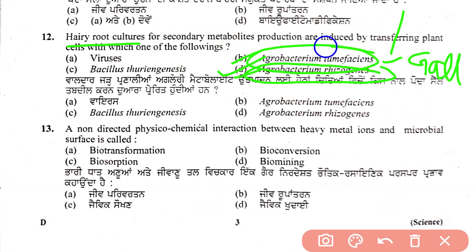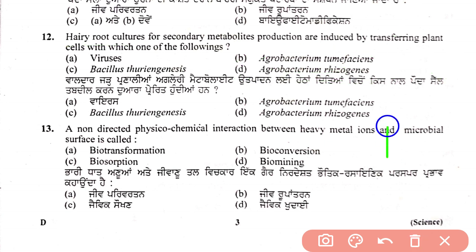Correction: the answer for root culture induction is Agrobacterium tumefaciens. Question 13 (question number 30): non-directed physical-chemical interaction between heavy metal ions and microbial surface — this process is known as biosorption.